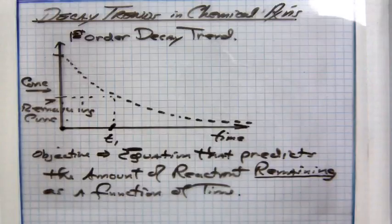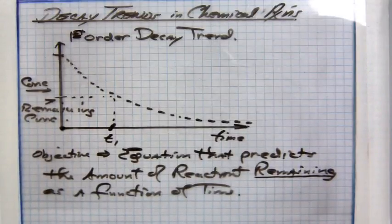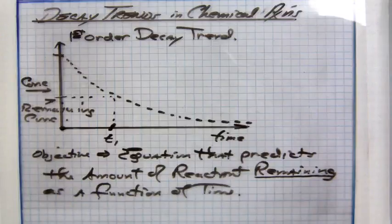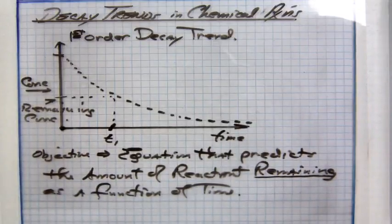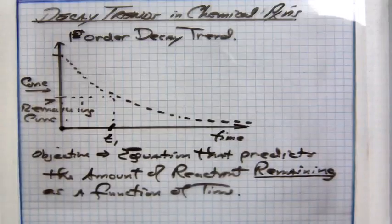How long does it take for 40% to decay? Well, the equation is not going to refer to how much decayed, but how much remains. So you'd have to take 100 minus the 40 and use that number. This may not make sense now, but it will in a second.